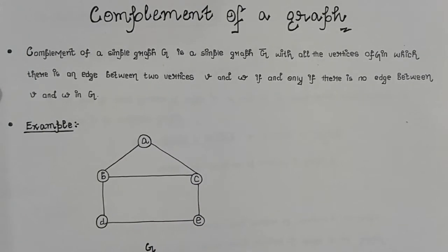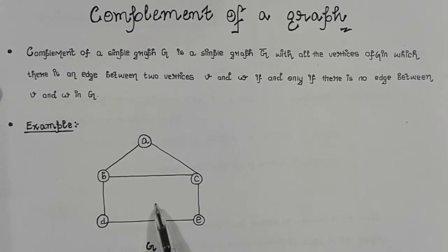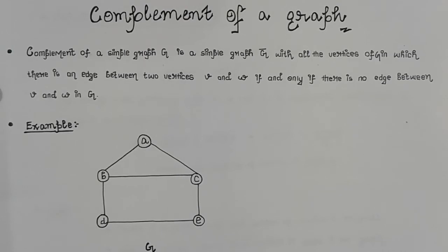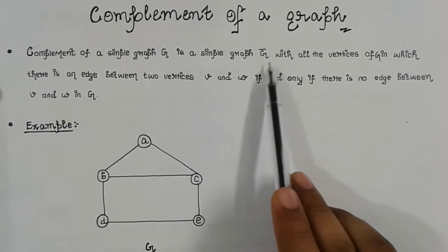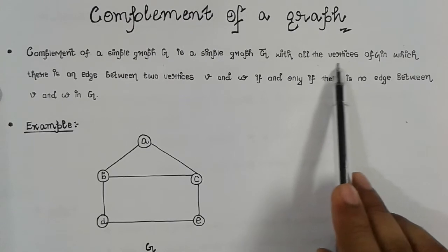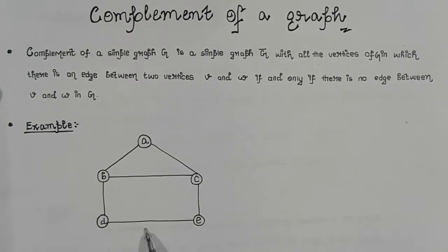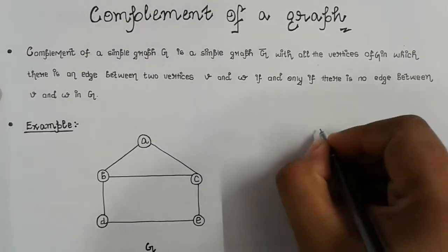Let us look at one example. We have been given a graph G, and now we try to make the complemented graph G-bar. By definition, our complementary graph G-bar must have all the vertices which are present in the given graph G. So first of all, we will draw the vertices here.